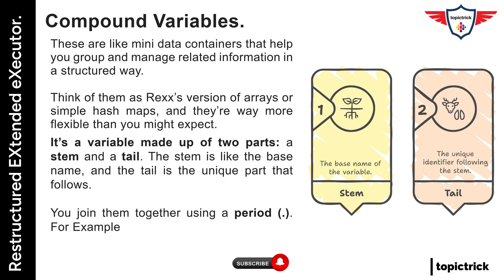So what exactly is a compound variable? It's a variable made up of two parts: a stem and a tail. The stem is like the base name, and the tail is the unique part that follows. You join them together using a period. For example, score.player1 equals 80 or score.player2 equals 90. In both cases, score is the stem and player1 or player2 is the tail.